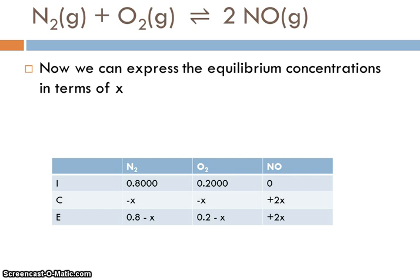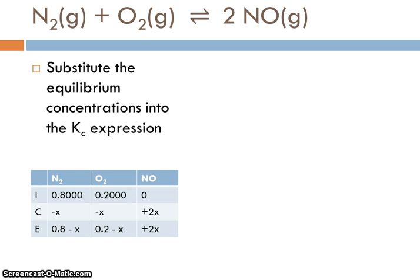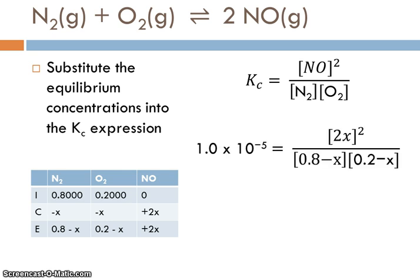So we can then fill in our equilibrium concentrations in terms of x: 0.8 minus x, 0.2 minus x, plus 2x. Great. And we don't know what x is yet, so part of what we have to do is solve for x. So we're going to substitute our equilibrium concentrations in terms of x into our Kc expression. So that's what we get: 2x squared over 0.8 minus x times 0.2 minus x. Now you're looking at this probably going, oh, I'm going to need the quadratic equation. And you're right.